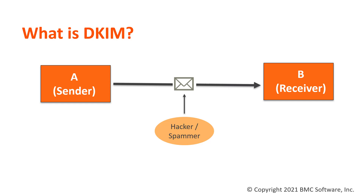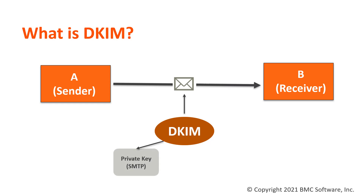In order to prevent this, we can use DKIM. DKIM uses two signatures or keys. The first one is the private key, which is created in the SMTP server. The second is the public key, which is published in the DNS domain.